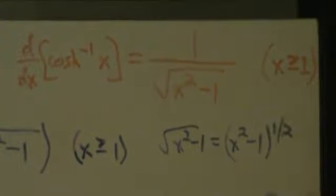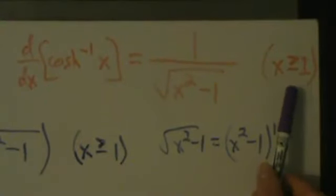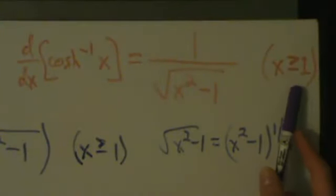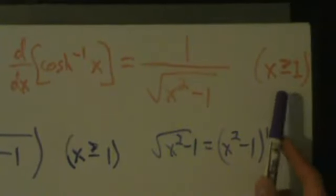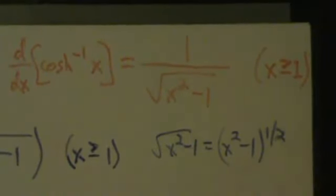And again, we have the restriction x is greater than or equal to 1, but that's not a calculus thing — it just comes from the definition of the inverse hyperbolic cosine. That's more of a precalculus or trig thing.